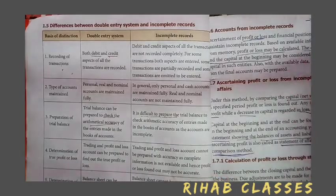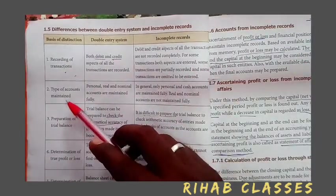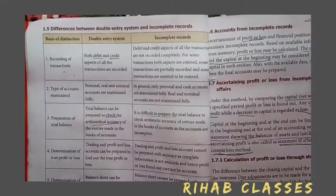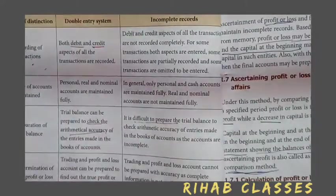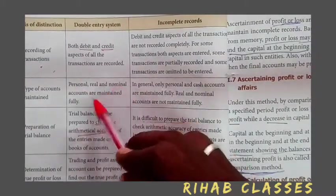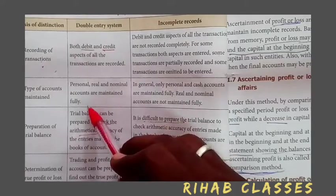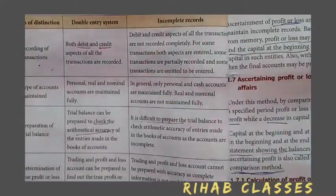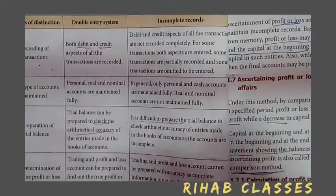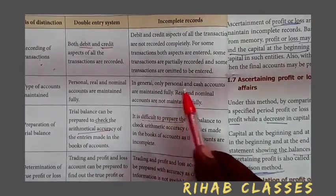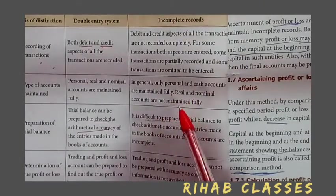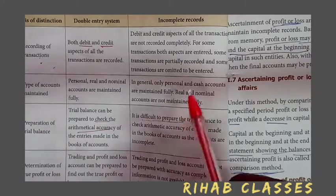The next basis of distinction is accounts maintained. In the double entry system, three accounts — personal account, real account, and nominal accounts — are fully maintained. But in the single entry system, only cash account and personal account are maintained.